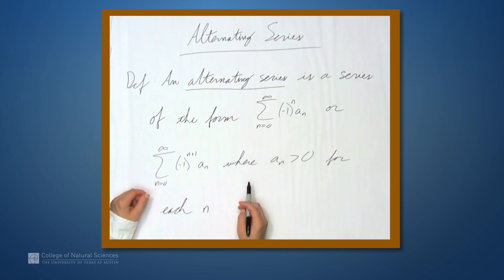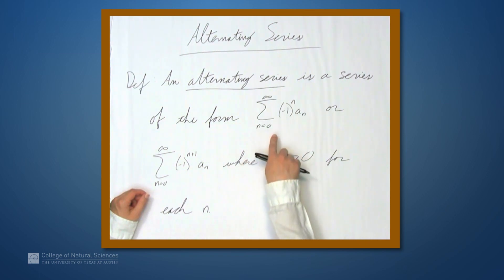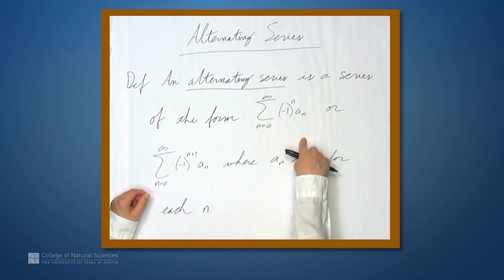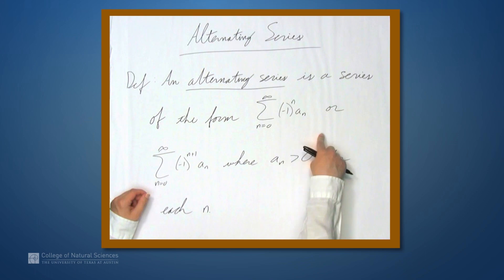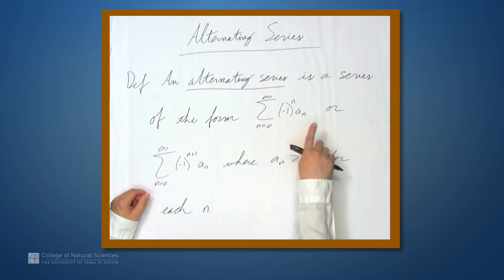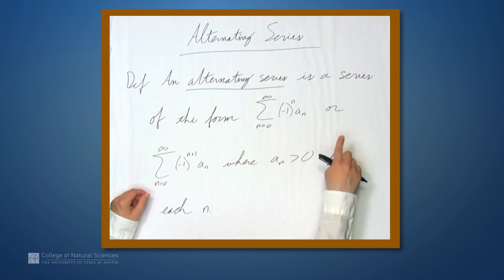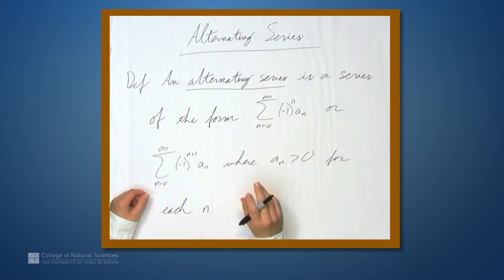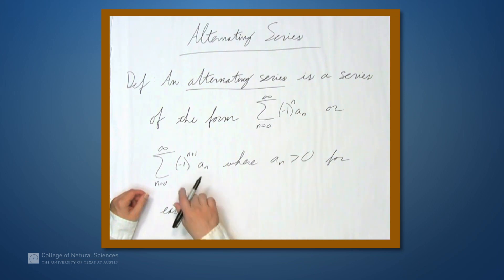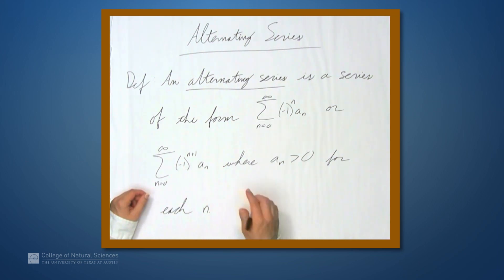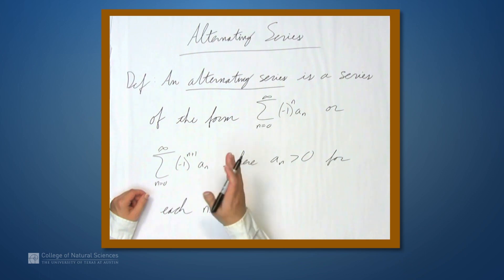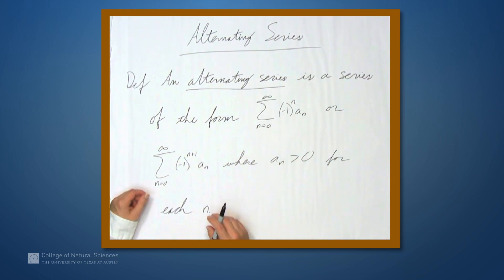This is just the technical way of saying that the first term is being added, then the second subtracted, the next added, then subtracted — a positive term, a negative term, positive term, a negative term — or vice versa: negative term, positive term, negative term, positive term, and so on. Alternating in the sense that you're alternating the sign of each consecutive term.